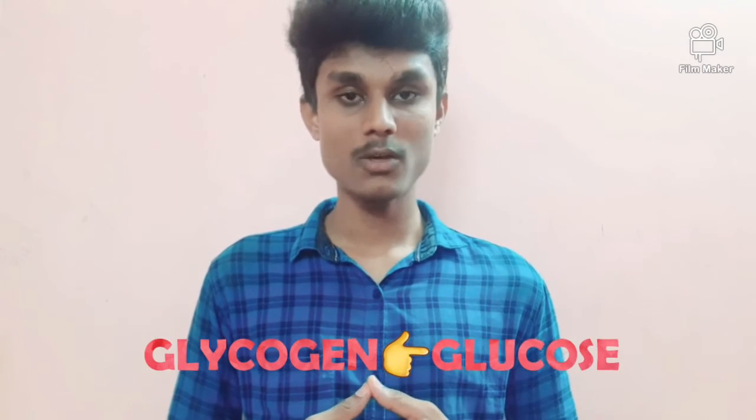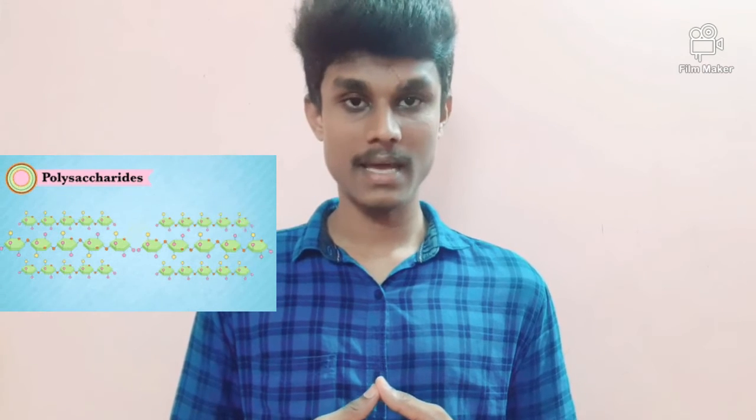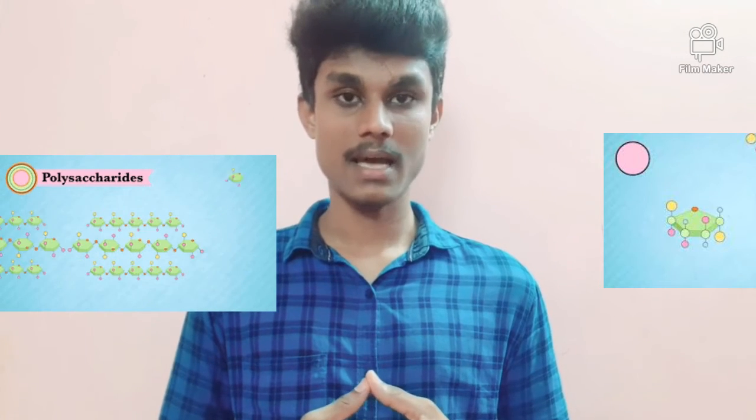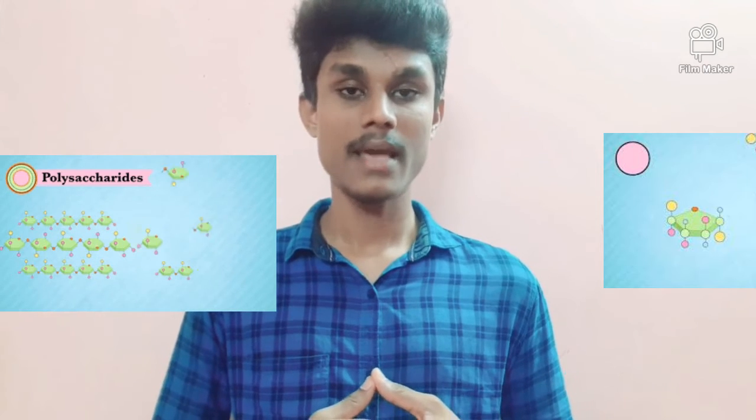The next function of endoplasmic reticulum is glycogenolysis. Glycogenolysis is the conversion of glycogen into glucose. It is mediated by the enzyme glucose-6-phosphatase, which is found inside the endoplasmic reticulum and converts glycogen into the simpler carbohydrate molecule glucose.